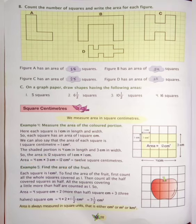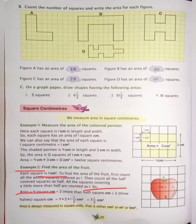Now let's see example 5. Find the area of the fruit. Each square is 1 square centimetre. To find the area of the fruit, first count all the whole squares covered as 1 — 1, 2, 3, and 4. Then count all the half-covered squares as half; all squares covering a little more than half are counted as 1. So the whole squares give an area of 4 square centimetres.